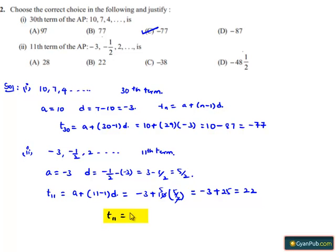Therefore T11 is 22, and option B is the correct choice.